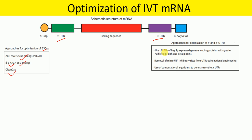For optimization of the 5' and 3' UTRs, we can use UTRs of highly expressed genes such as alpha and beta globins, which have greater half-life. We can also remove microRNA inhibitory sites from the 3' and 5' UTRs using rational engineering, or use computational algorithms to generate synthetic 5' and 3' UTRs.